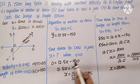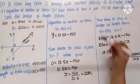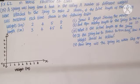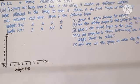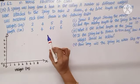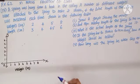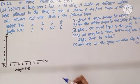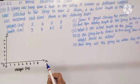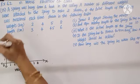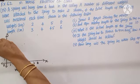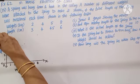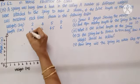Question number thirteen: a spring was hung from a hook in the ceiling. Different weights were attached to the spring to stretch it, and the total length was measured each time, shown in a table. First subdivision: draw a graph showing the results, plotting weights on the X-axis and lengths on the Y-axis. Weights are in kilograms and lengths in centimeters.